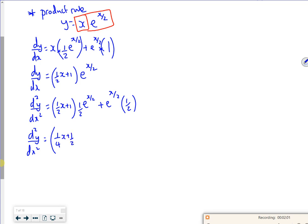So that's this bit kind of dealt with. And then I've got this half here to deal with. So that's going to be plus a half. Then I've got e to the x over 2.